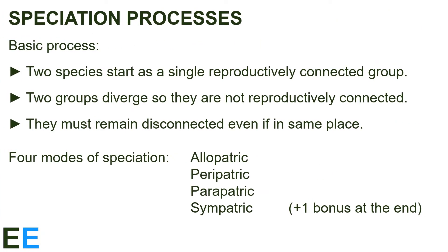The basic process of species formation works like this. First, two species start as a single reproductively connected group — this is just one species to start with. Then two groups diverge so that they're not reproductively connected. For the final step, these two groups must remain disconnected even if in the same place. The isolation of the two new groups has to be based on their biology, not just their location or opportunity. In this video, we'll look at four main modes of speciation: Allopatric, Peripatric, Parapatric, and Sympatric speciation.